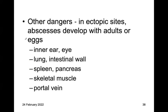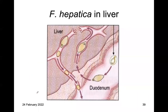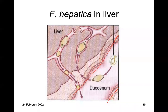There is risk for ectopic sites with liver flukes — they can migrate into the ears, eyes, lungs, intestinal walls, spleen, skeletal muscles, and portal veins. So there is risk for extra-hepatic sites being infected due to migration into blood vessels. In the diagram: the metacercariae hatch in the duodenum, penetrate the duodenal wall, reach the liver parenchyma, migrate through the liver to the bile ducts, lay eggs, and the eggs exit through the biliary system back into the duodenum.